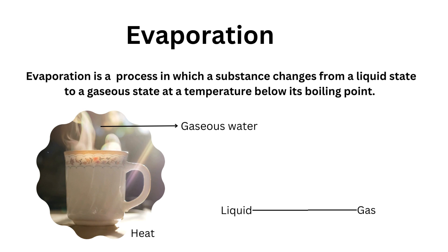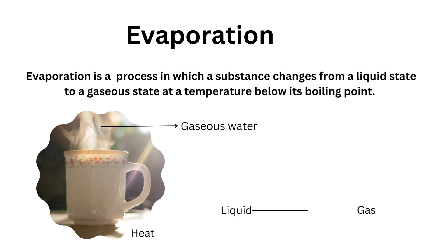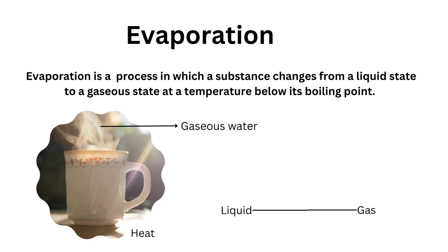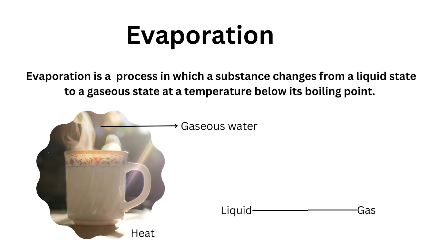The next process is evaporation. Evaporation is the process in which a substance changes from a liquid state to a gaseous state at a temperature below its boiling point. For example, when you heat a pot of water on the stove, bubbles form and the water starts to turn into vapor — a form of gas. During evaporation, liquid changes into gas by the addition of heat.